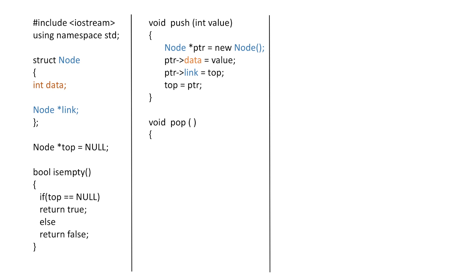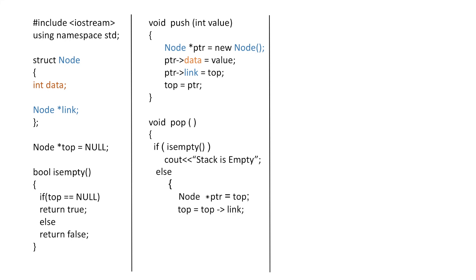In the pop function, firstly we will check if the stack is empty or not, and if the stack is empty we will simply print that the stack is empty. Else we will create a pointer ptr and equate it to top, which means it will now point to the topmost element, that is the starting element of our linked list. Next we will move the top pointer to the next node by equating it to the link part of the current node, and finally we will delete the current node using the pointer ptr.